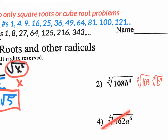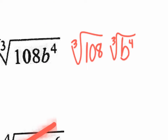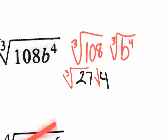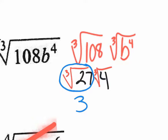I'm going to rewrite it as 27 times 4 and split the cube root. The cube root of a perfect cube number gives a nice answer — the cube root of 27 is 3. The cube root of 4 can't be simplified, so you just leave the cube root of 4.